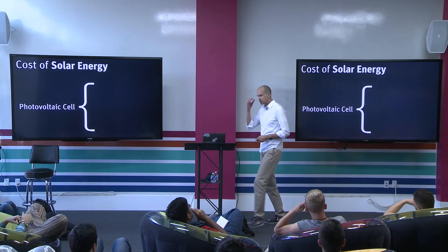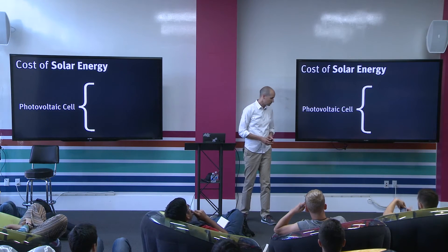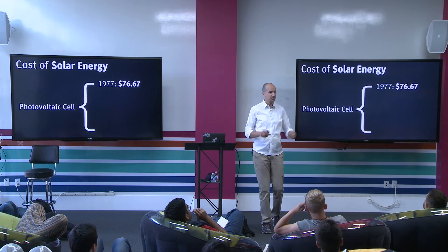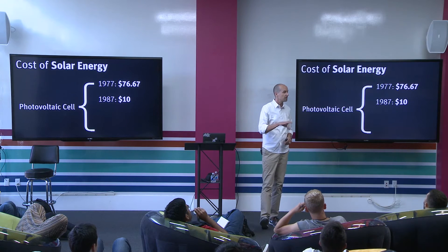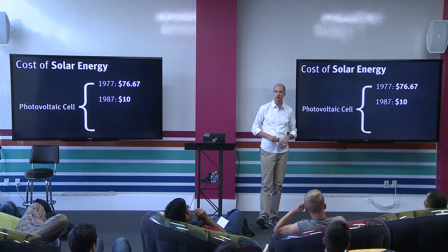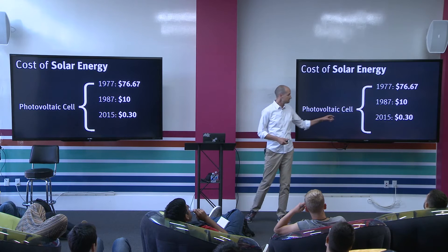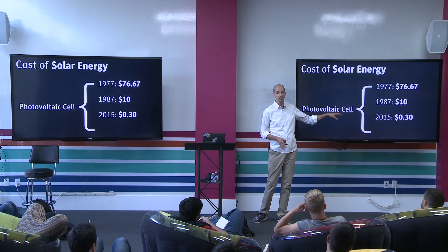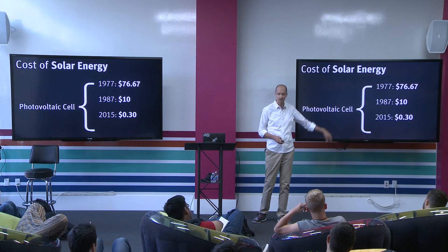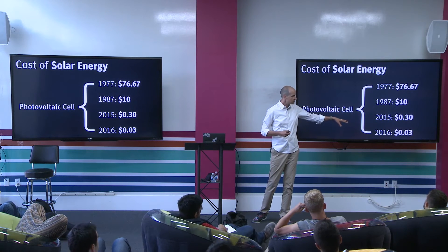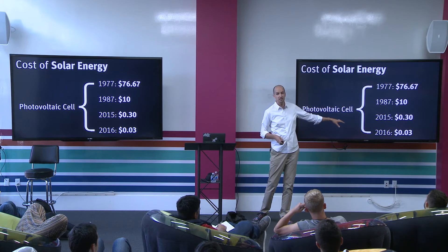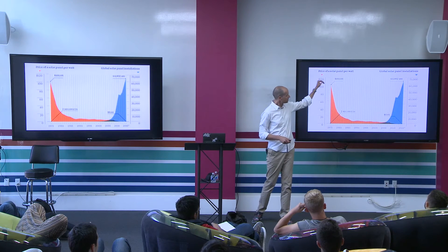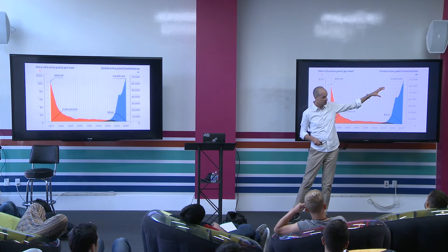Another interesting example is the cost of solar energy in comparison to conventional energy. Photovoltaic cells — solar energy: in 1977, $80 per kilowatt hour, extremely expensive. Ten years later, that price dropped by a factor of ten to about $10 per kilowatt hour — still way too expensive. In 2015, here in California, we were producing solar at the same price as conventional energy from coal: 30 cents. A year later, they're building an 800-megawatt solar facility in Dubai for 3 cents a kilowatt hour. When you plot this, you get this curve showing the price of solar dropping against the installed base of solar panels rising.